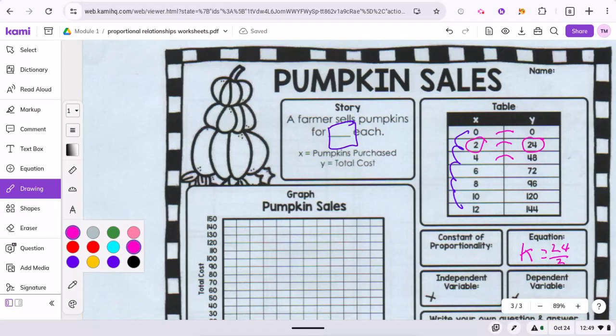So the proportionality would be 12 because 24 divided by two is 12. That would mean they would be $12 each because you get two for $24.